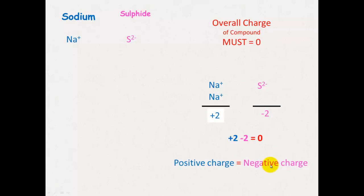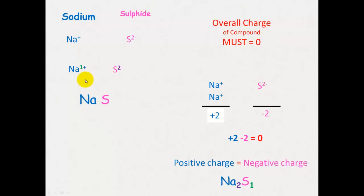The total positive charge must equal the total negative charge. So we have two sodiums and one sulfide: Na₂S. There's no need to write the subscript 1 for sulfide. Using the cross method: the number of sulfide ions needed is given by the valency of sodium, which is 1 — so one sulfide; and the number of sodiums needed is given by the valency of sulfide, which is 2 — so a subscript 2 next to sodium.